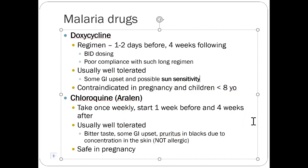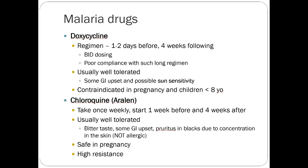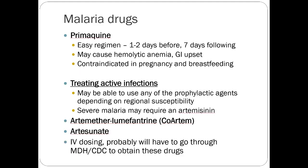Chloroquine (Aralen) is taken once weekly, starting one week before and continuing four weeks after. Usually well tolerated, but it has very high resistance rates. It is safe in pregnancy. Primaquine: take one to two days before and continue seven days following. It may cause hemolytic anemia and GI upset, and it's contraindicated in pregnancy and breastfeeding. It's not preferred compared to Malarone but has a similar regimen.